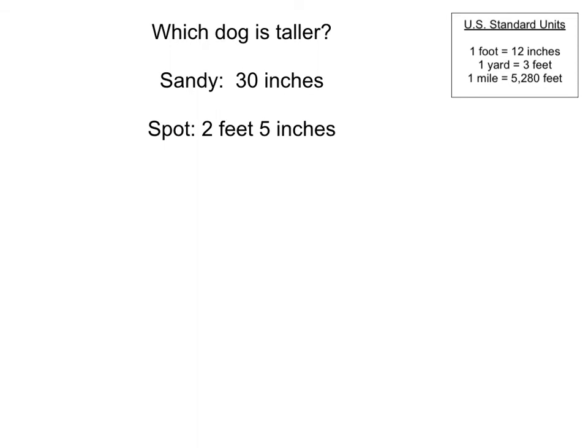Here's a story scenario to practice what we're learning. Which dog is taller? Sandy is 30 inches, and Spot is 2 feet 5 inches. Now there's two ways to solve this because we need to either figure out to convert both of the measurements into inches or both of the measurements into feet. So let's try it both ways.